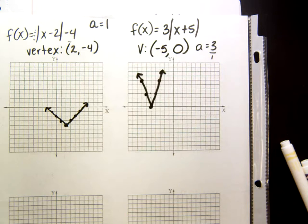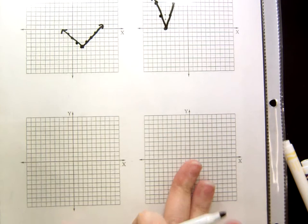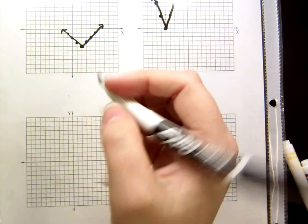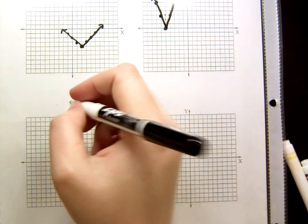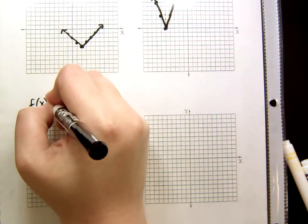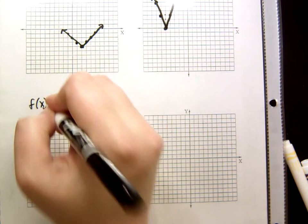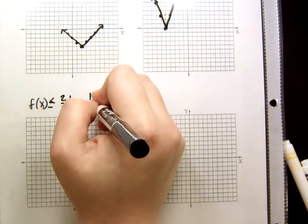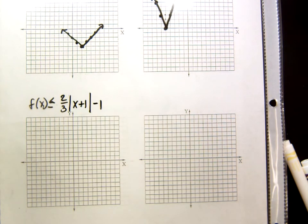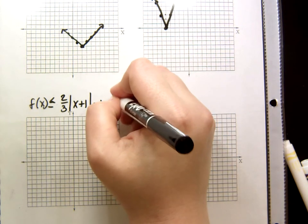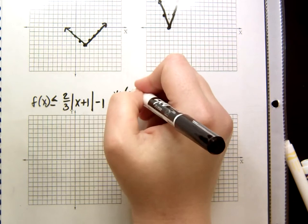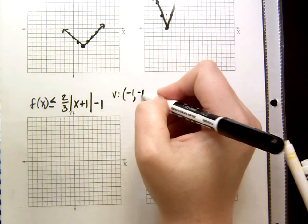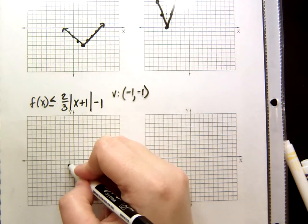This also works for inequalities. So, let's take f of x is less than or equal to 2 thirds absolute value of x plus 1 minus 1. The vertex of this one is going to be negative 1, change the sign on the inside, and negative 1, keep it when it's on the outside. So, negative 1, negative 1 is my point.